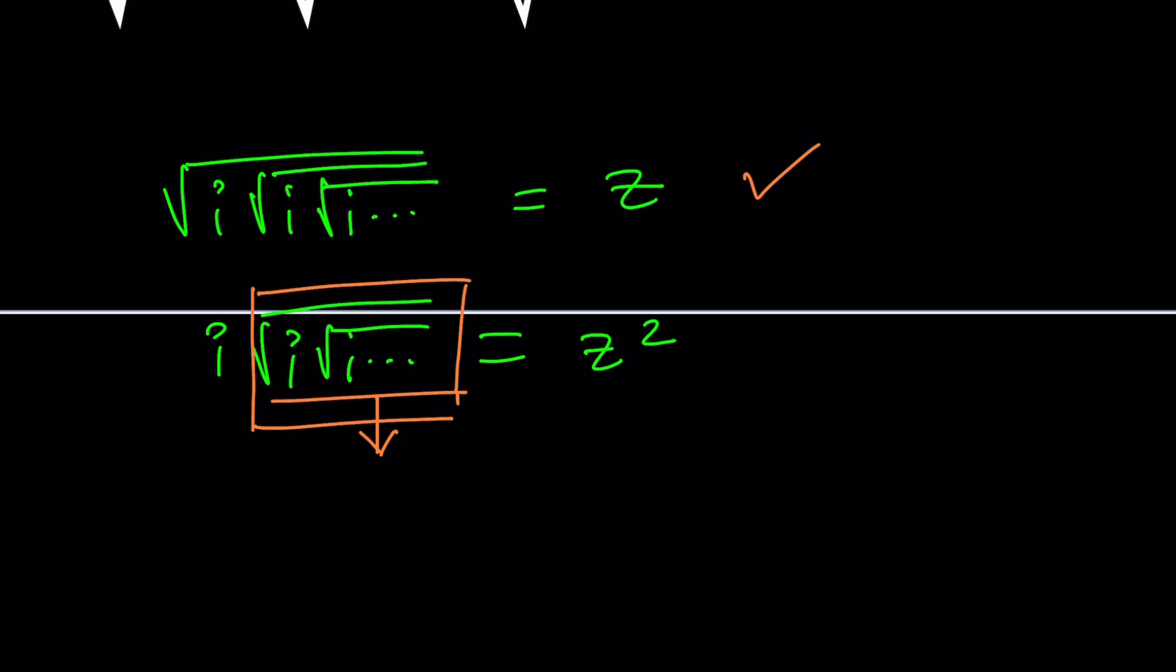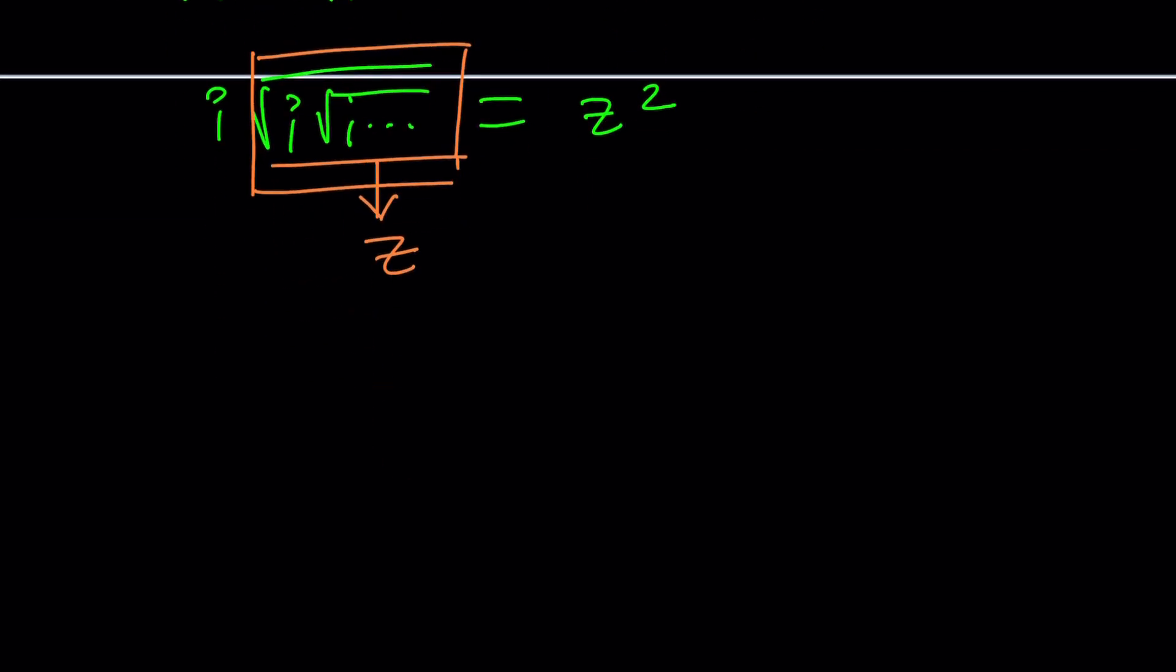Since this is the exact same thing, we can safely call that z. So now we have a very simple equation. This is the beautiful thing about substitution: you get something infinite, and then all of a sudden it turns into something finite. Of course, you always need to be concerned about convergence. Does this work?